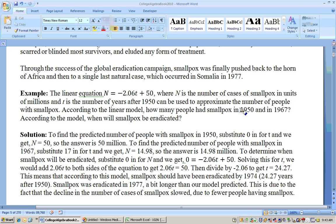That's the starting date. So if we put 0 in for T, we would get negative 2.06 times 0, which is 0, plus 50 is 50. So it would be 50, but when we read the problem, it says N is the number of cases of smallpox in units of millions. So back in 1950, there was approximately 50 million people that had smallpox, and that's pretty close to accurate.